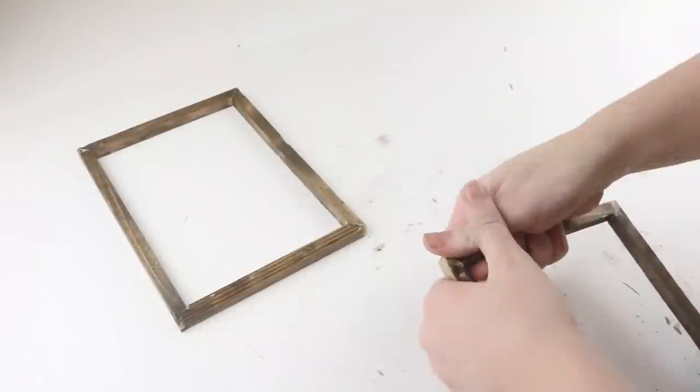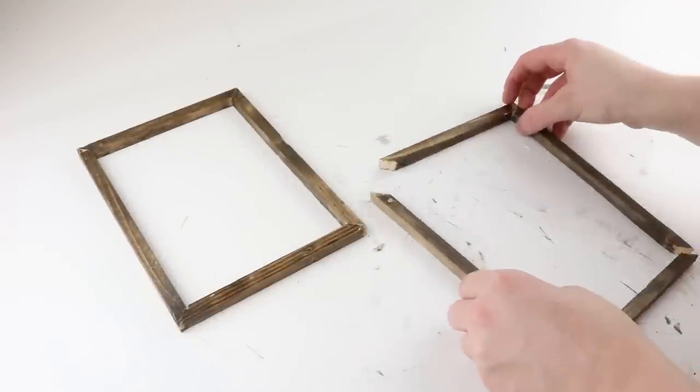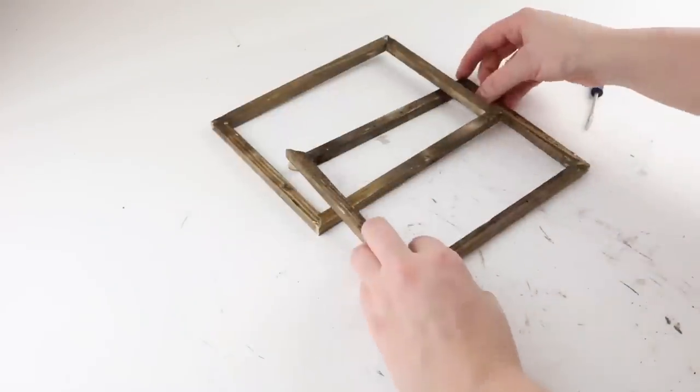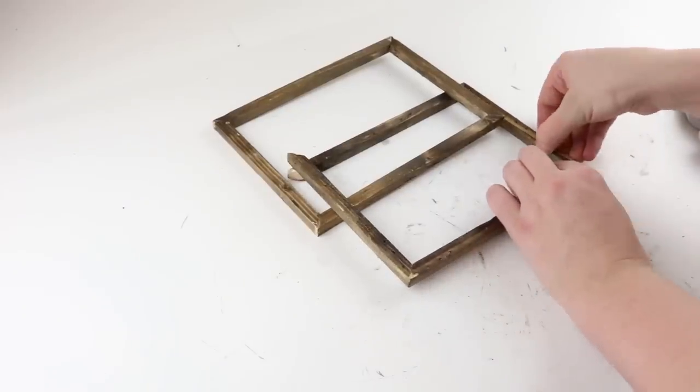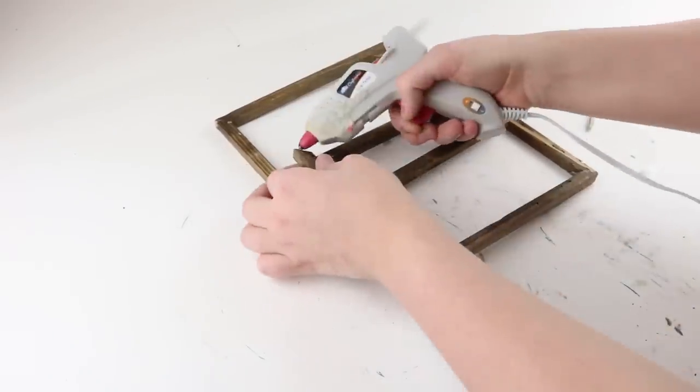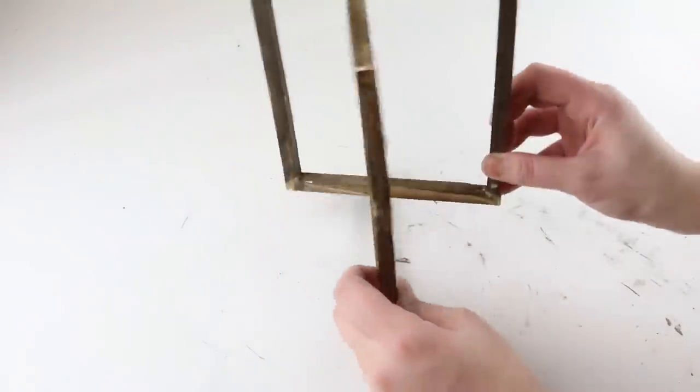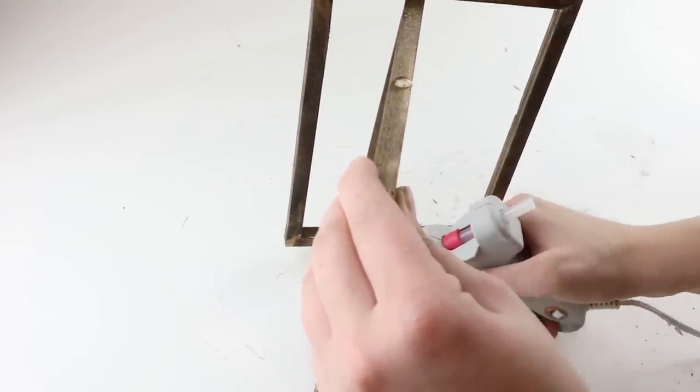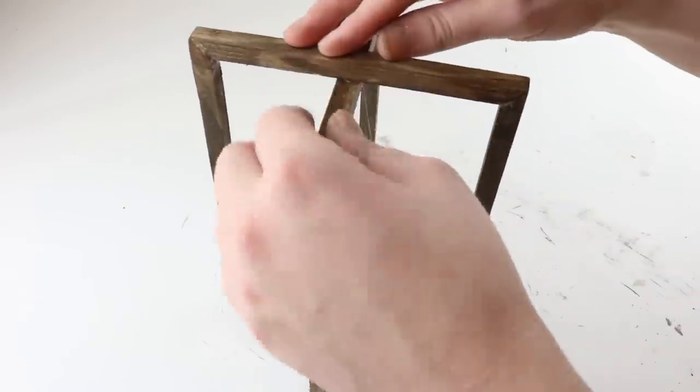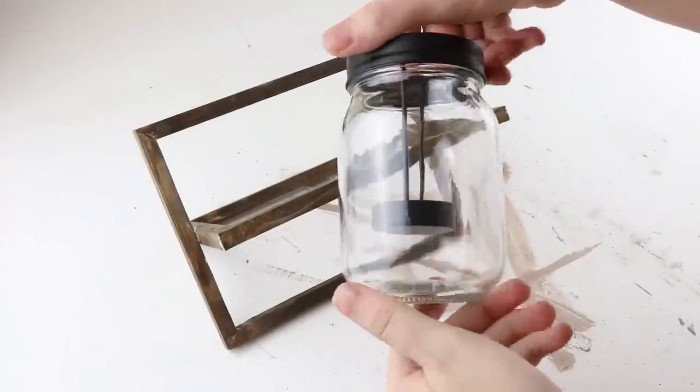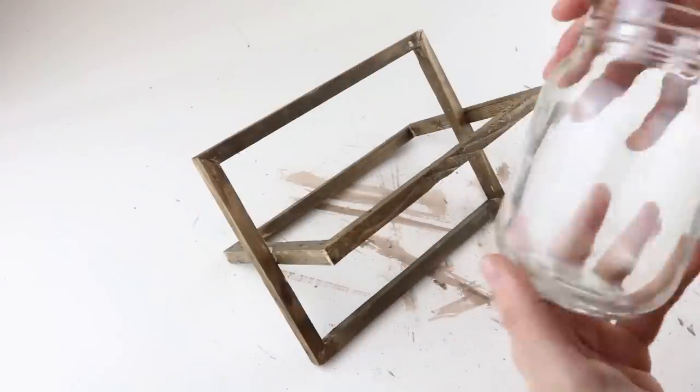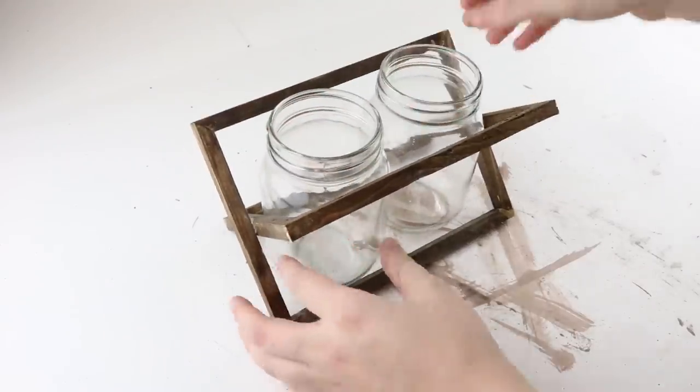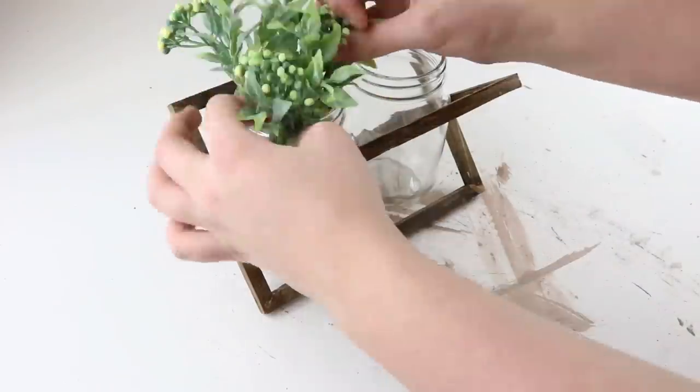And then for this project I stained two 6 by 8 canvases, broke off the corners once again, and I'm going to hot glue them in the middle. Instead of making a lantern, I decided to turn it sideways and put these glass jars from Dollar Tree inside. To finish it off, I just put greenery from Walmart inside.